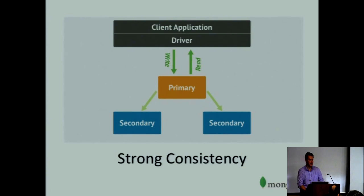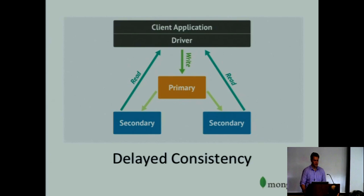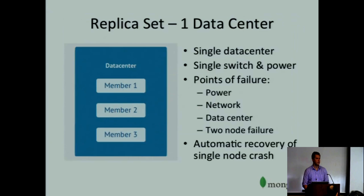Only one node in the set is able to accept writes — it's always the primary. If you are reading from the primary, you will read the data that you wrote, so we are strongly consistent in that sense. However, there might be situations where you don't actually need that level of consistency — it might be okay to read data slightly out of date. In that case, your client application can decide it's acceptable to read from secondaries. Your writes are still plugged into the primary and being replicated through secondaries, while clients are directly connected to secondaries and performing reads against them.